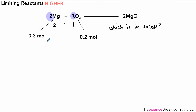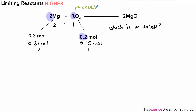Here we've got 0.3 moles of magnesium and 0.2 moles of oxygen. If we have 0.3 moles of magnesium, we only need 0.15 moles of oxygen to give us our 2-to-1 ratio. That means we can work out which one is in excess. Since we only need 0.15 moles of oxygen but we have 0.2 moles, the oxygen is in excess and the magnesium is the limiting reactant — that's the one that's going to run out.